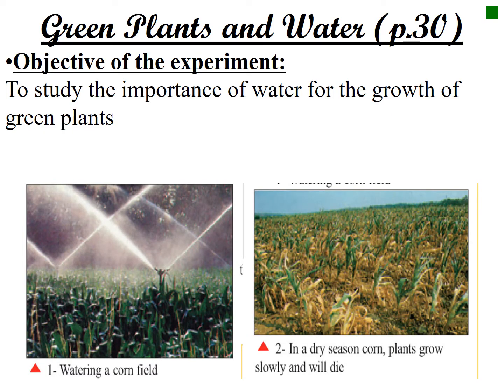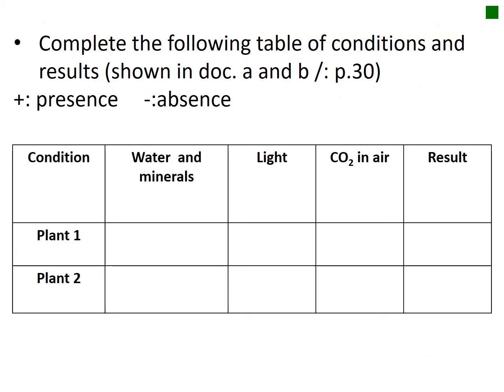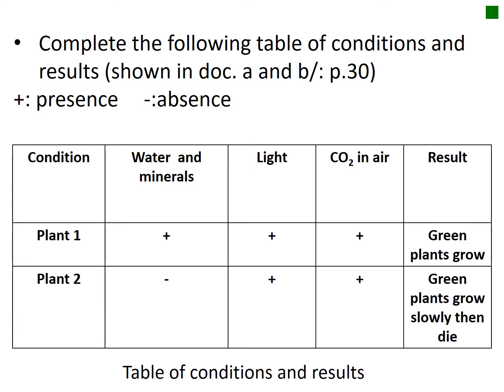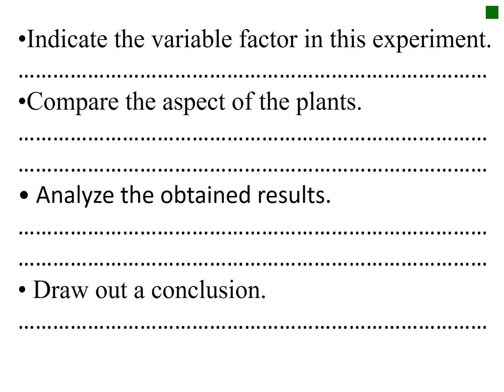The experiment on page 30 talks about green plants and water. The objective is to study the importance of water for the growth of plants. Two figures show that both plants have all convenient conditions, except plant one has water while plant two lacks water. The variable factor is water. In the table of conditions, all conditions are identical except water and minerals, which are present in plant one and absent in plant two.